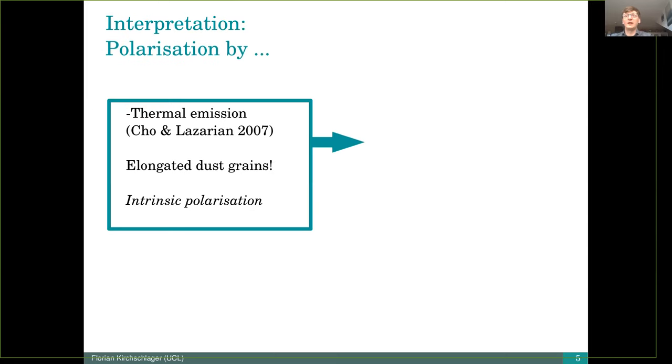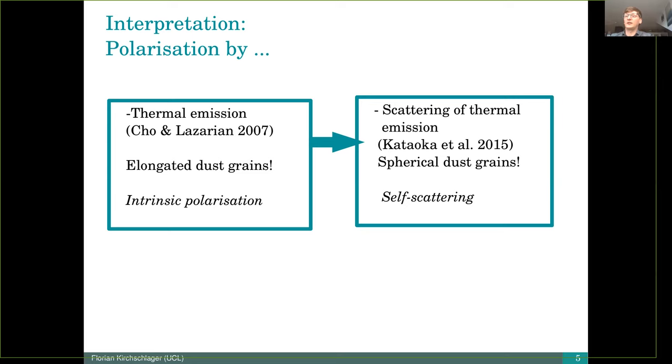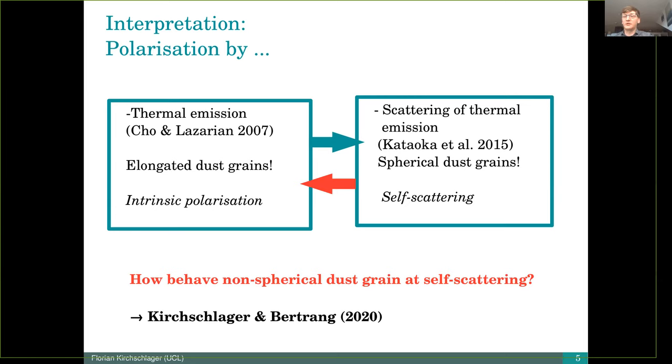And this brings us directly to the thing which we investigated. So we know that thermal emission by elongated dust grains causes intrinsic polarization, and this thermal emission can then be scattered. But the model by Kataoka uses only spherical dust grains so far. What we did is we focused on the question, how behave non-spherical dust grains in the self-scattering regime? And my colleague Gesa Bertrang and I published this study at the beginning of this year.